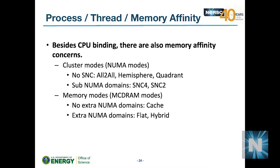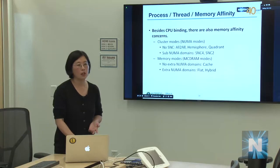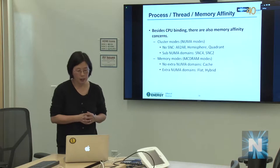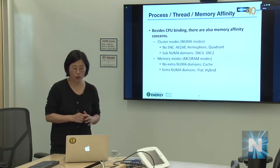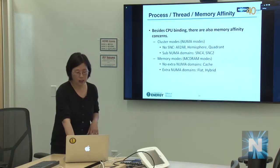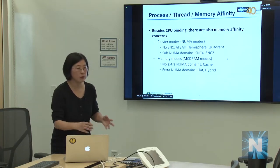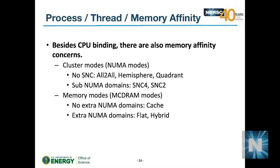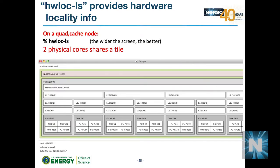In quad cache or quad flat mode, there is only one NUMA domain containing all CPUs. With SNC2 and SNC4, multiple NUMA domains appear. The 'hwloc' (HWL location) utility shows hardware topology. For example, in quad cache you see one NUMA domain P0 with 94 GB, and pairs of cores sharing an L2 cache — these pairs form a 'tile' boundary you should try not to split.